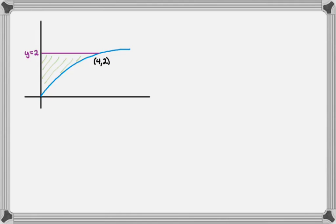The first thing I'll do is create a graph. I have my line y equals 2, I have the intersection point (4, 2), and I'm going to label (0, 0) as well because I'm going to need that. Instead of calling this curve y equals radical x, I'm going to call it x equals y squared. Then I'm going around the y-axis, so I put my little arrow in, and I've labeled (0, 0).